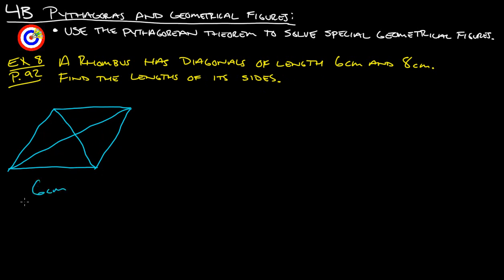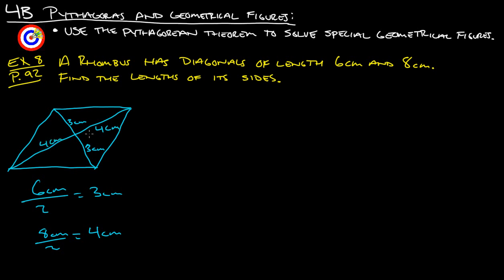Each piece of the 6-centimeter diagonal is 3 centimeters long — so this is 3 centimeters and this is 3 centimeters. The 8-centimeter diagonal divided by 2 gives us 4 centimeters, so this here is 4 centimeters and this is also 4 centimeters. And remember, all the angles in here are right angles. To make this clearer, let's pull one of these triangles out, because we only need to find one side — once we find one side, we've found all the sides of the rhombus since they're all the same.